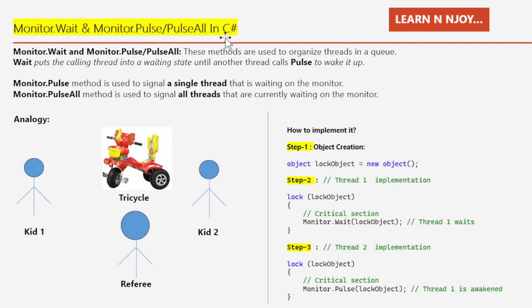In C#, as we know, multi-threading involves managing multiple threads, and coordinating their actions can be tricky. When threads need to talk or work together, we use tools like Monitor.Wait, Monitor.Pulse, and Monitor.PulseAll. Today we look at how these tools help make thread coordination more effective.